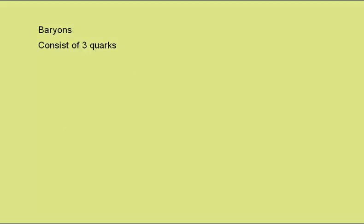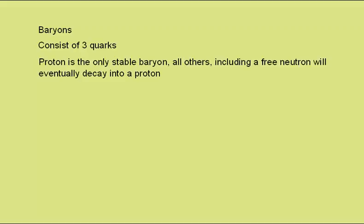First, to look at the baryons. These consist of three quarks. The proton is the only stable baryon. All the others, including free neutrons, will eventually decay into a proton. The neutrons inside a nucleus are stable.